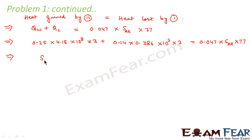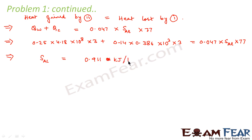From this we can calculate the value of S_AL and it comes out to be 0.911 kilojoule per kg per kelvin. This is the specific heat capacity of aluminium.